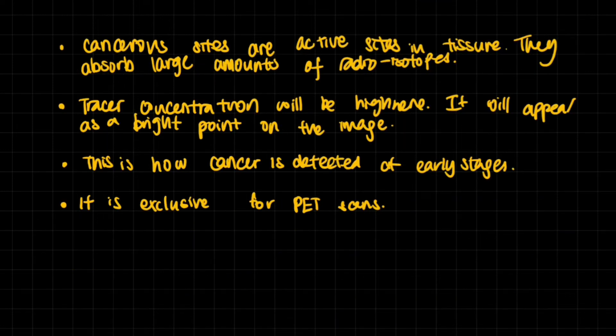So cancer sites are active sites in tissue. They absorb large amounts of radioisotopes. Tracer concentration will then be higher here, and it will appear as a bright point on the image that's formed by the computer. This is how a cancer is detected at early stages. It's exclusive for PET scans.